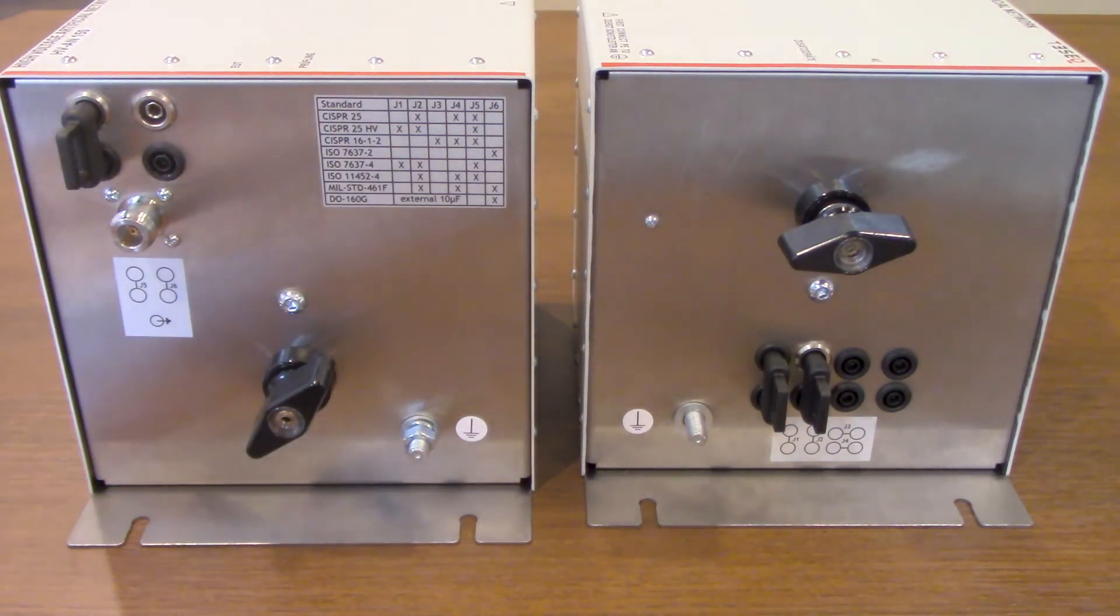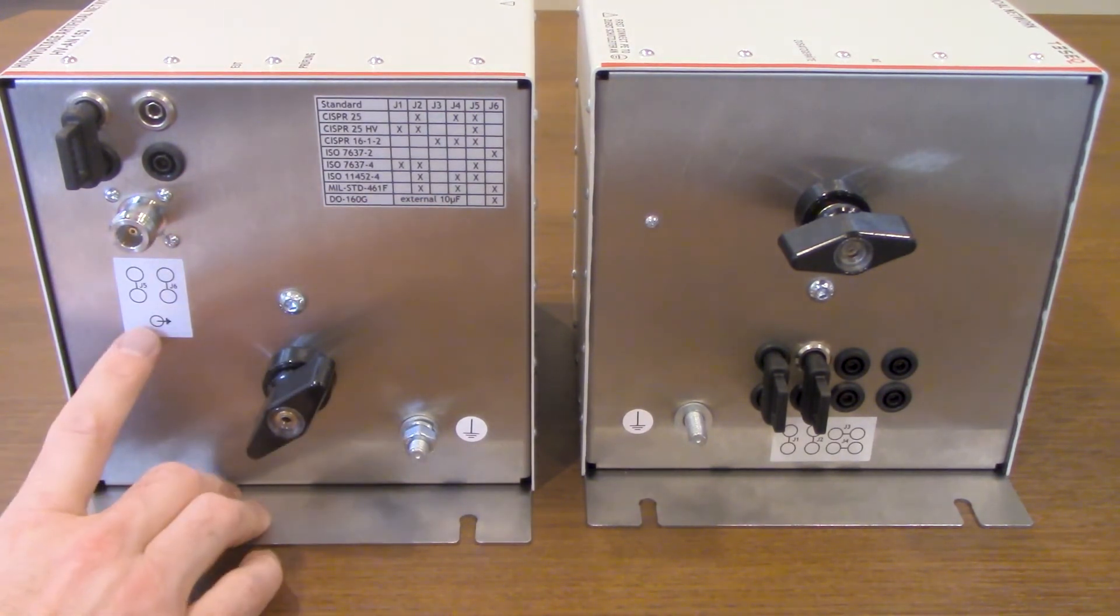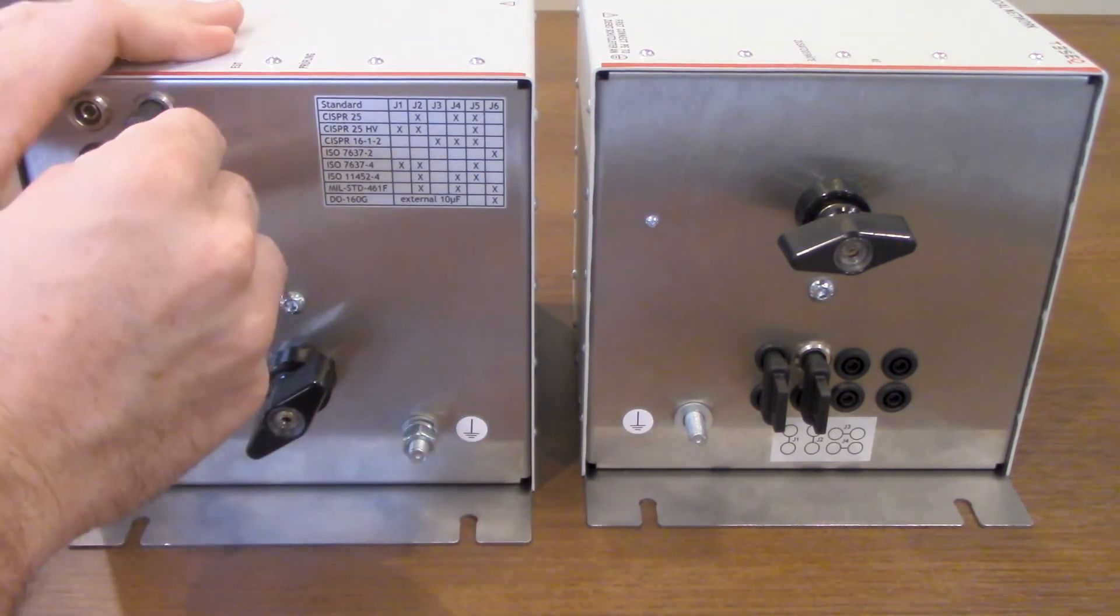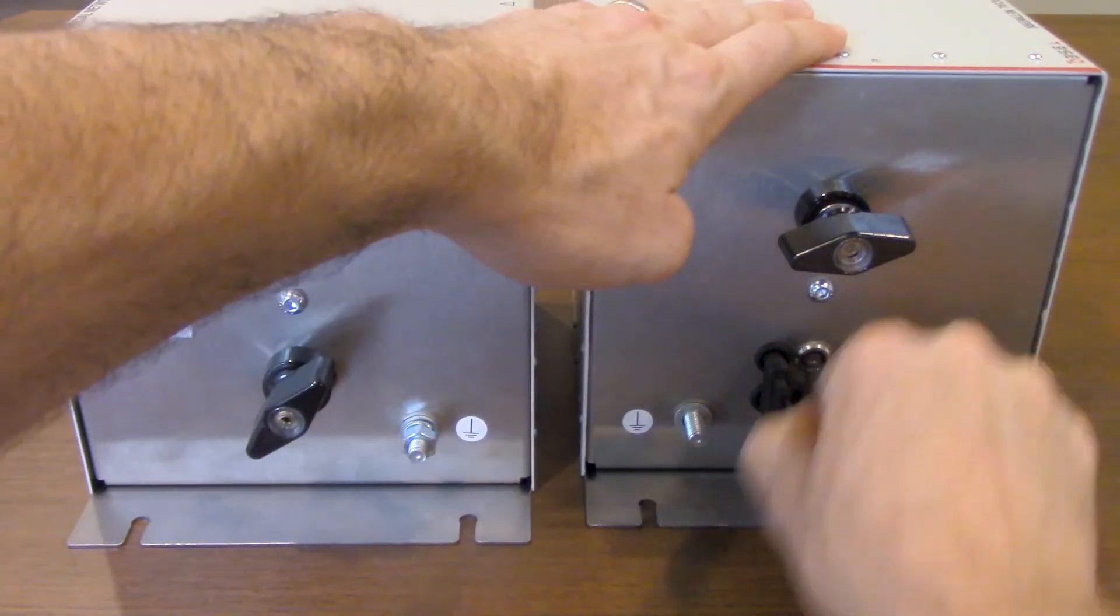Referencing page 12 of the user manual you'll see jumper 5 right now is in place, only jumper that needs to be in there is jumper 6 so we're going to remove this and place it in the jumper 6 position. Referencing the same page you will see you do not need any other jumpers in place so we're going to remove these from jumper positions 1 and 2.